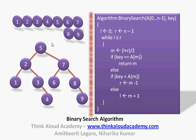The first middle element is 5, the middle element on the left of 5 is 2, and on the right is 7. Searching for element 1: L=0, R=8, so M = (L+R)/2 = 0+8/2, which points to element 5, the middle element. We check: does the key match A[M]=5? It does not match.